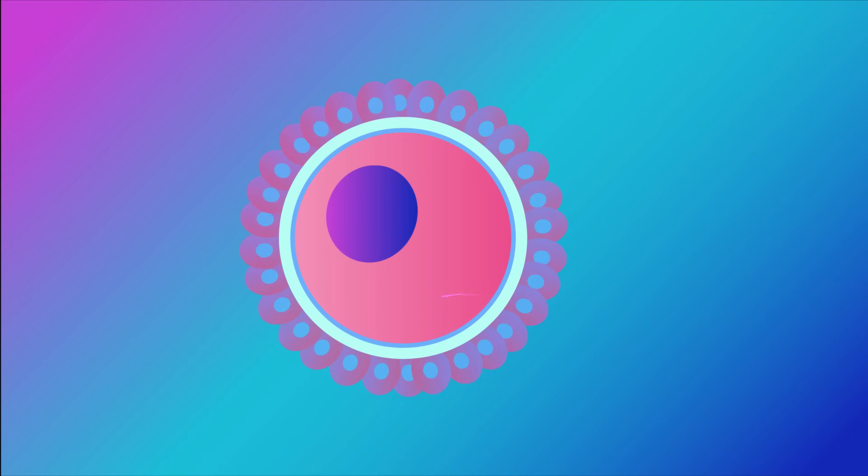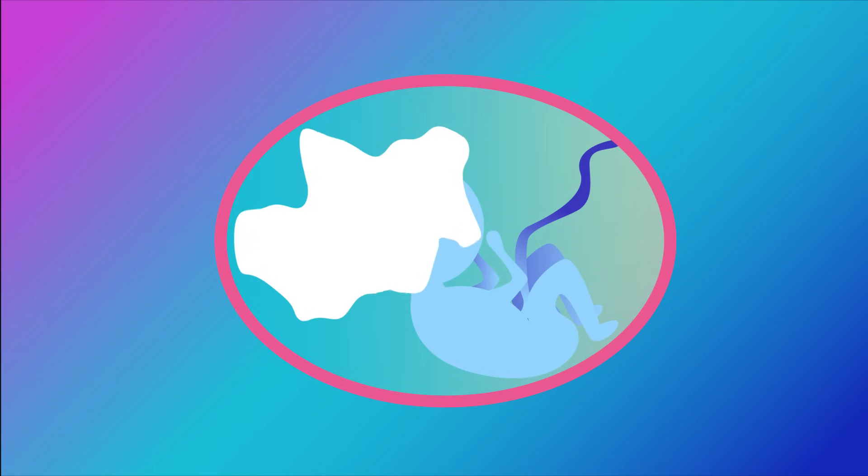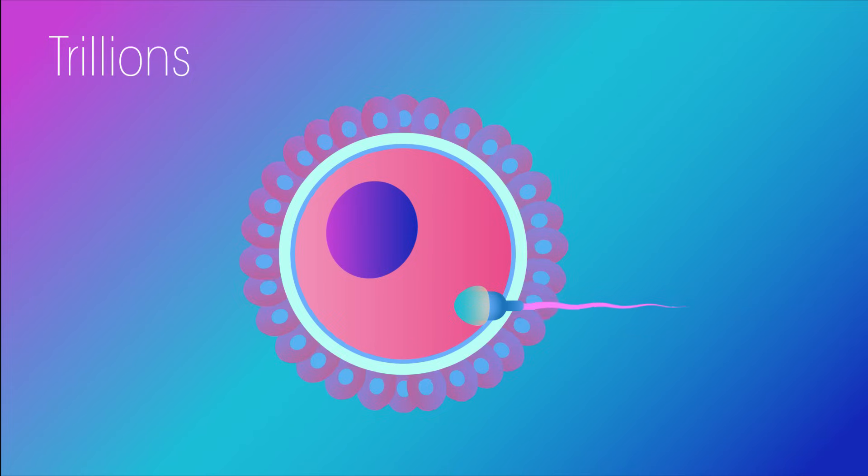Sperm meets egg, which then undergoes multiple cell divisions to make a living organism with trillions of cells, all doing their own specialized function. Impressive! But where do the egg and sperm come from? The answer is, as you may have guessed from the title, meiosis.